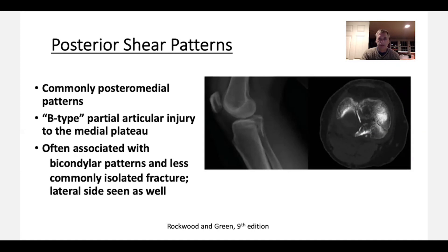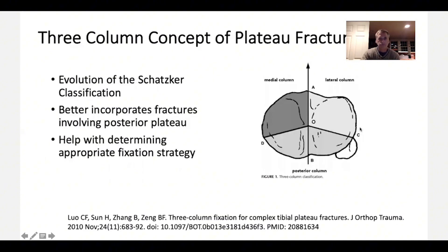If you can get a CT scan, look at these patterns to see if it's a posterior shear versus a medial shear. This brought up the three-column concept of plateau fractures, where you have a medial column, a lateral column, and a posterior column. This is important to consider when you're trying to figure out the best approach to fixing these fractures.